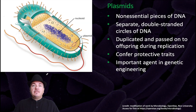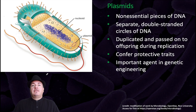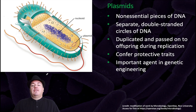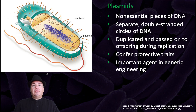In addition to the DNA of the chromosome, you can also find in some bacteria plasmids. Plasmids are non-essential pieces of DNA. They are separate, double-stranded circles of DNA. They're duplicated and passed on to offspring during replication. They can confer protective traits, and they're an important agent in genetic engineering.